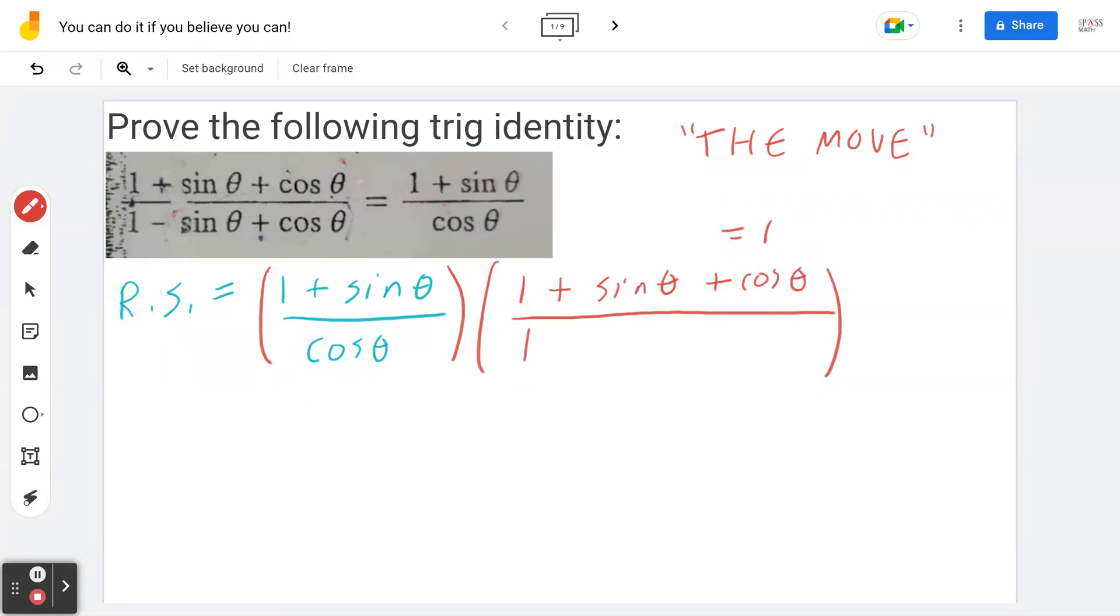Now when you do this there are two different ideas that you want to think about. Idea number one: you're really multiplying it by 1 so you don't change the value. And idea number two: you're changing the form which is going to help you get closer to what you want.